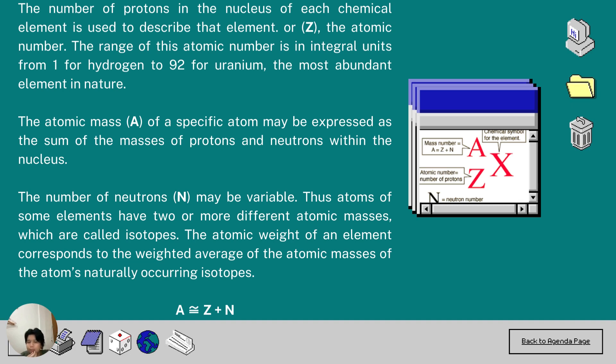The description of each element is based on the number of protons in the nucleus. The atomic number or Z, the range of this atomic number ranges from 1 for hydrogen to 92 for uranium, which is the most prevalent element in nature. Expressed in integral units, the atomic mass A of a specific atom may be expressed as the sum of the masses of protons and neutrons within the nucleus.